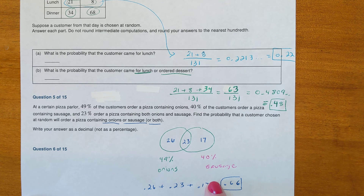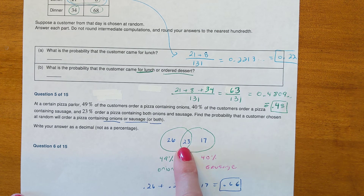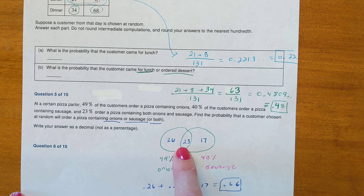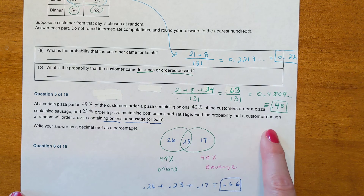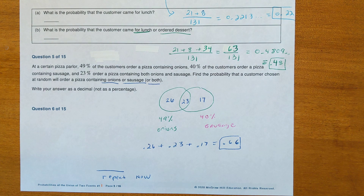Last problem: at a pizza parlor, 49% of customers ordered onions, 40% ordered sausage, and 23% ordered both. The overlap is 23%, so those who ordered only onions is 49 − 23 = 26, and only sausage is 40 − 23 = 17. The probability of ordering onions or sausage or both is 26 + 23 + 17 = 66, or 0.66. Remember, you can always email for help if needed.